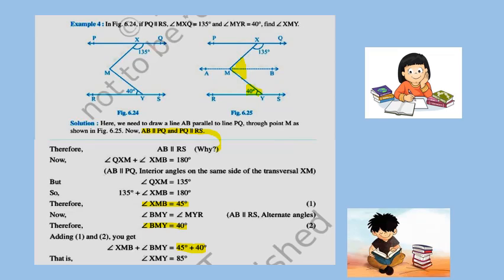See the second figure. It is given PQ is parallel to RS, and we are drawing AB parallel to PQ. As we saw in the previous session, when two lines are parallel and a third line is parallel to one, all three are parallel. So AB is parallel to PQ, and PQ is parallel to RS — therefore AB is also parallel to RS.